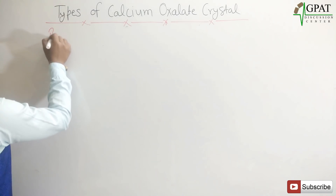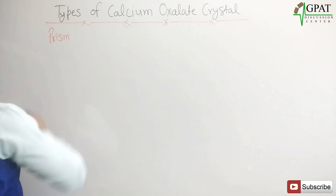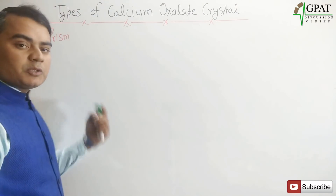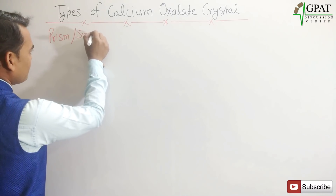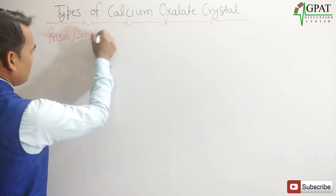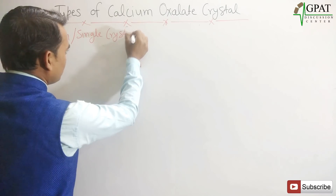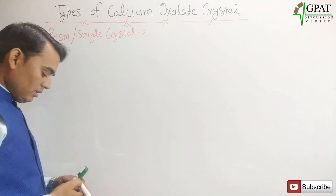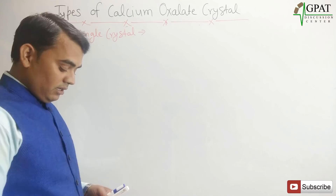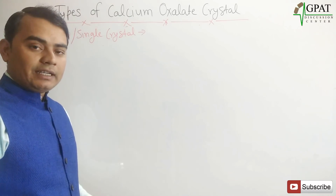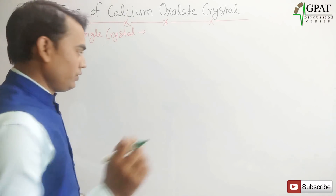The first type of crystal is prismatic. The prismatic type crystal is also known as a single crystal. Now, how do you remember all the drugs that contain this crystal? I have prepared a trick — I hope it will be helpful for you.